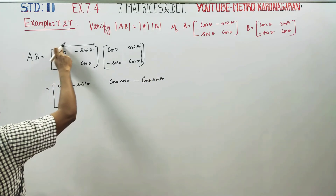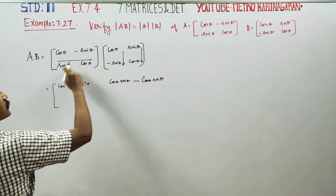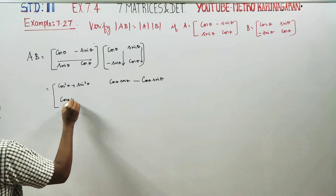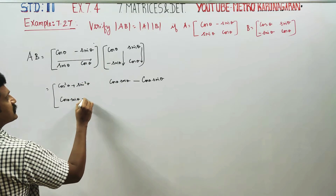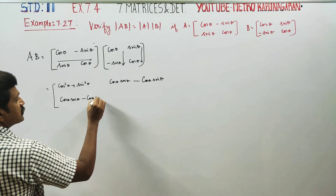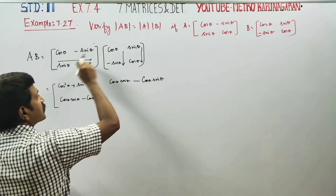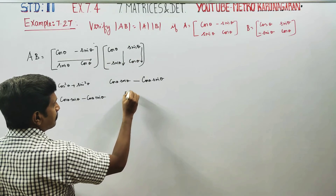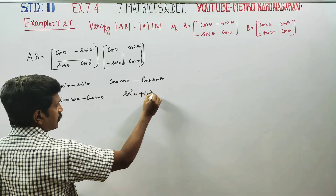Second row into column: sin into cos theta is cos theta sin theta. Plus into minus is minus, cos into sin theta is cos theta sin theta. Second row, second column: sin into sin is sin squared theta. Plus cos into cos is cos squared theta.